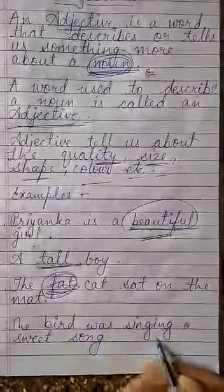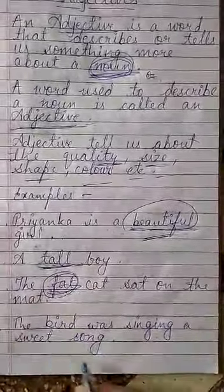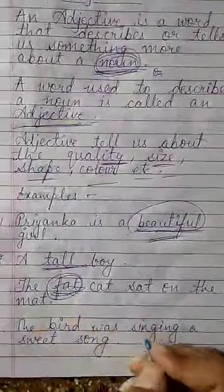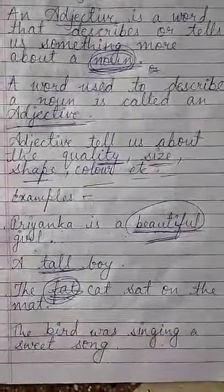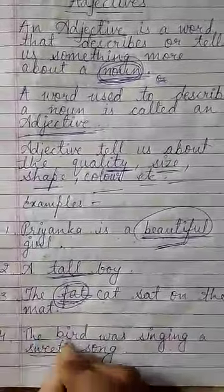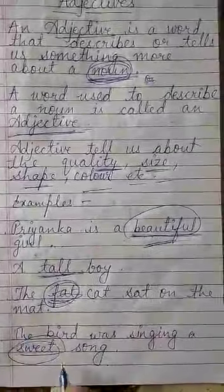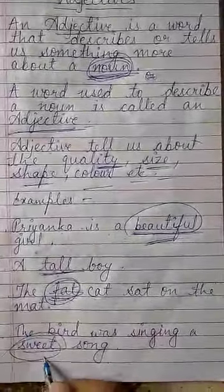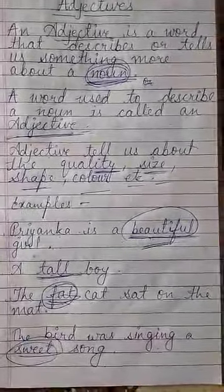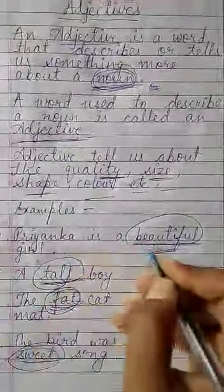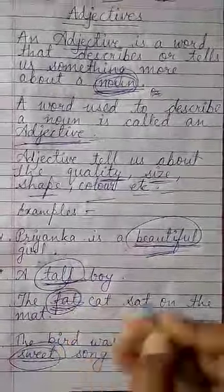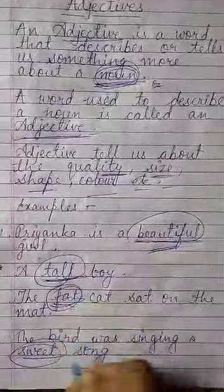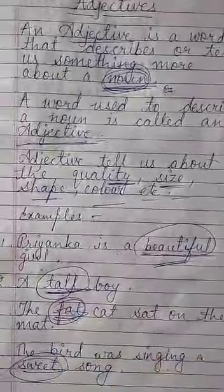The bird was singing a sweet song. Bird was singing — bird kaise gaana kar rahi hai? A sweet song. So 'sweet' is the adjective here. So all these words — beautiful, tall, fat, sweet — all these words are adjectives.